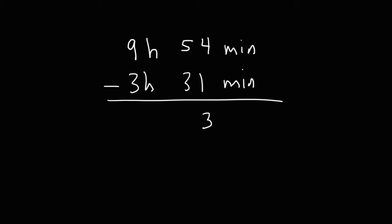4 minus 1 is 3. And 5 minus 3 is 2. So subtracting 54 by 31, we get 23. And then we need to subtract 9 hours by 3 hours, which will give us 6 hours. So the answer here is 6 hours and 23 minutes.